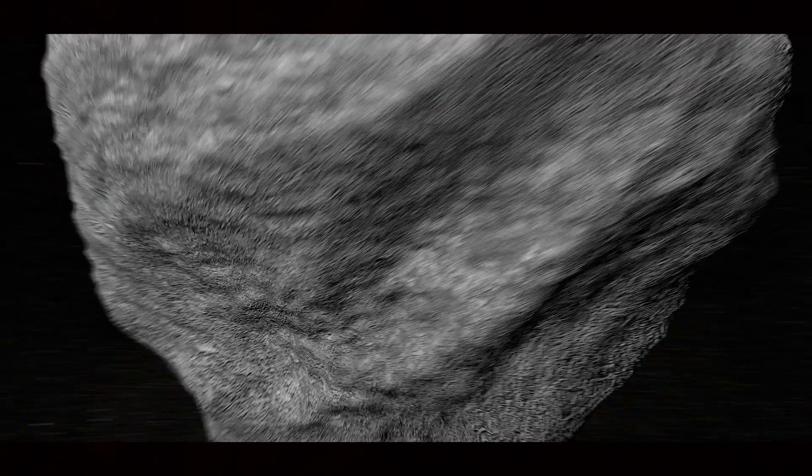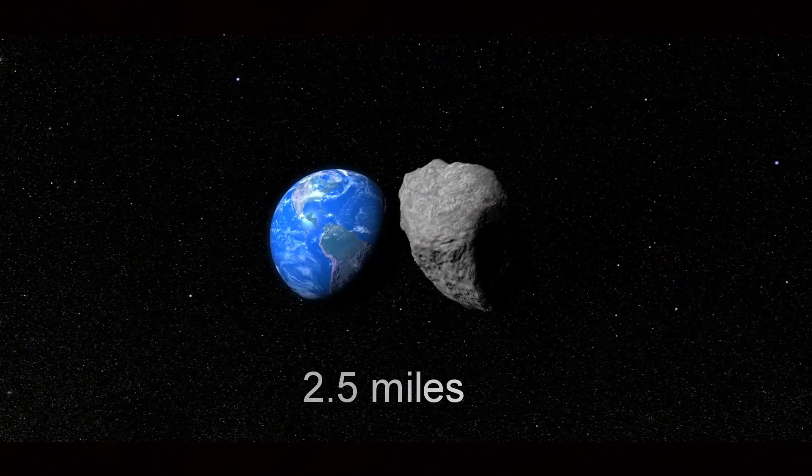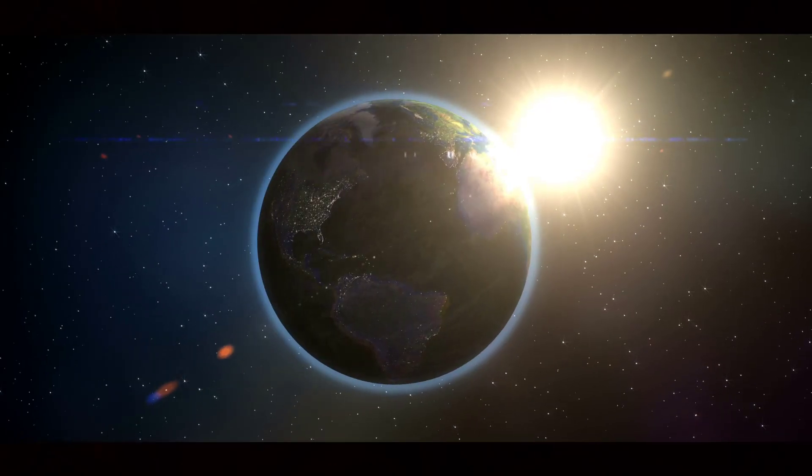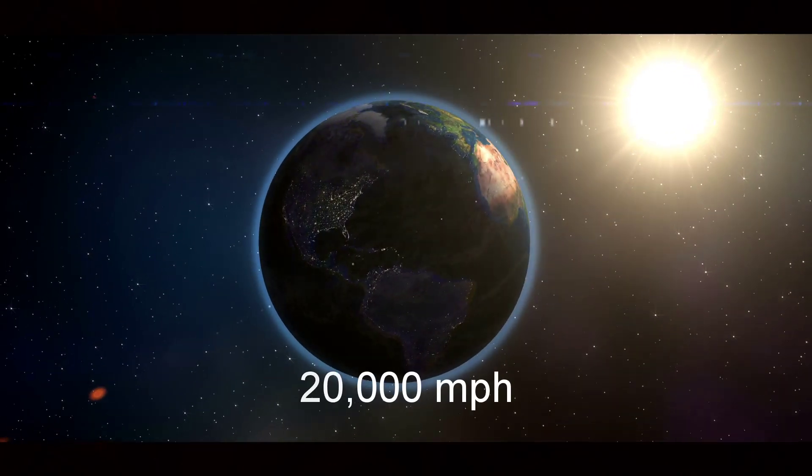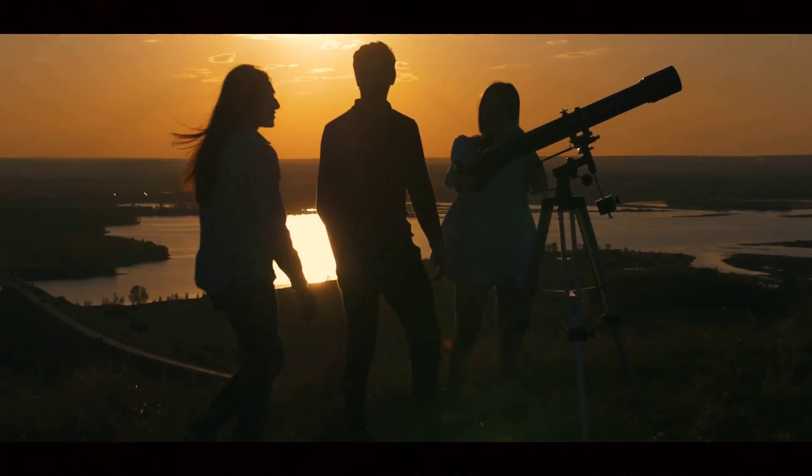When the celestial object makes its closest approach to Earth, it will be traveling at a speed of 20,000 miles per hour. And when it does, both professionals and amateur astronomers can view it using their telescopes.